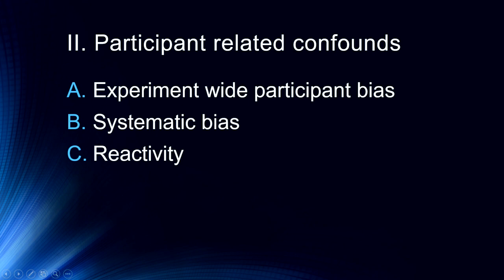I want to start with participant-related confounds. There are several different ways in which participants can be associated with confounding variables. We'll start with what we call experiment-wide participant bias, which usually happens because we've selected a narrow range of participants. We'll then talk about systematic bias, where some participant-related variable has varied systematically along with our independent variable. And finally, we'll talk about how participants react to an experimental situation — what we call reactivity.